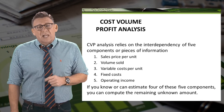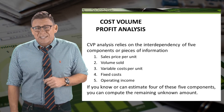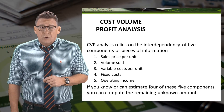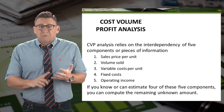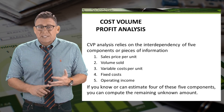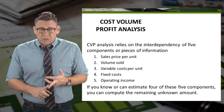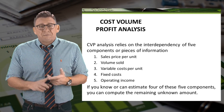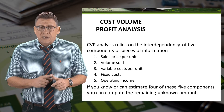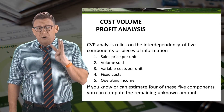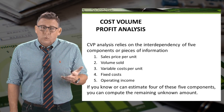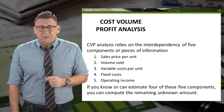CVP analysis is basically elementary algebra. We have five variables: volume, sales price, variable costs, fixed costs, and operating income. As long as we know four of these variables, we can solve for the fifth.